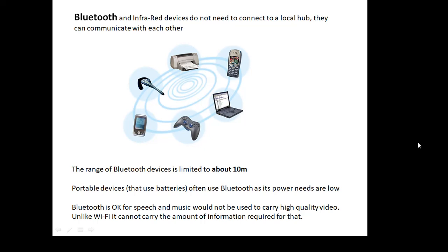With Bluetooth and infrared devices, one difference is that you don't need a local hub or router — devices can communicate directly with each other. Your mobile phone can communicate with a printer or a Bluetooth headset; your PlayStation controller can communicate with the PS3 or PS4. The range of Bluetooth is limited to only about 10 meters, less than Wi-Fi. Bluetooth devices tend to be portable ones that use batteries, because Bluetooth's power needs are low — it doesn't transmit a huge amount of information and doesn't have a very big range. Bluetooth is okay for speech and music, but you wouldn't use it for HD video as it can't carry the same amount of information.